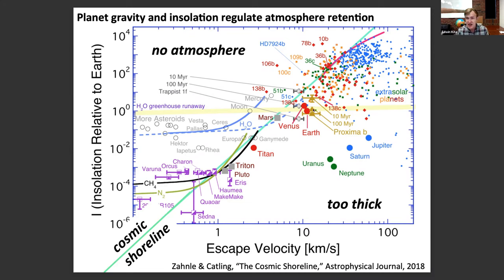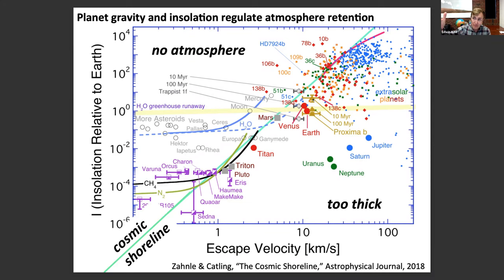Proxima Centauri B is the closest exoplanet — a roughly Earth-mass planet in the habitable zone, which will almost certainly be visited by spacecraft in the future. Its host star, Proxima Centauri, is a red dwarf. Red dwarfs have a long phase of relatively high brightness early in their history. Three gold symbols here show three different stages in Proxima Centauri B's evolution. For maybe 100 million years earlier in its history, it was exposed to so much light from the star that it would have been above the runaway greenhouse limit — too hot for life before entering the habitable zone where it is today.